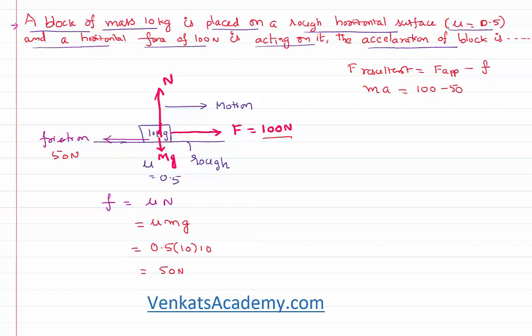So mass of the body is given like 10 kilogram. Acceleration you have to calculate. 100 minus 50 is 50. So acceleration is nothing but equal to 50 by 10. That is nothing but equal to 5 meter per second square.